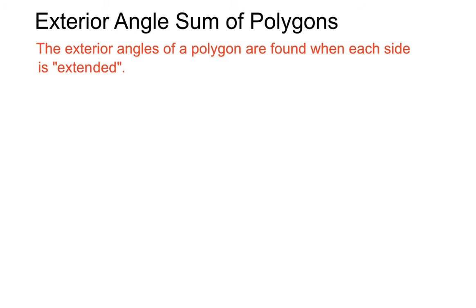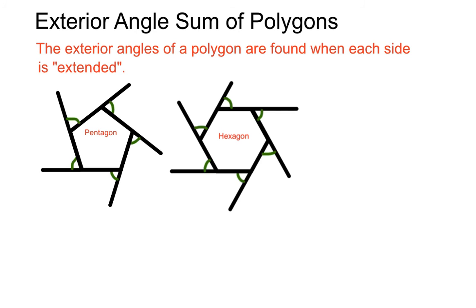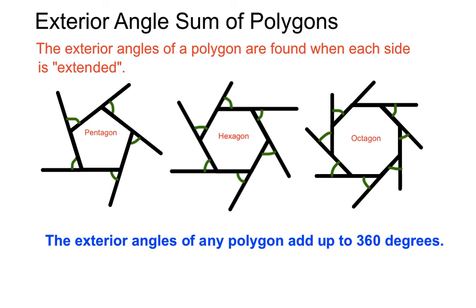So here we have all those shapes. Remember, we get those exterior angles by extending the sides we said. And no matter whether it's a pentagon, hexagon, octagon or any other polygon really, all those exterior angles in every case add up to 360 degrees. Nice one to remember that one.